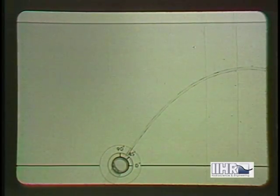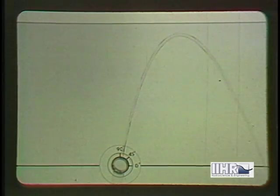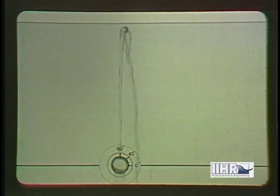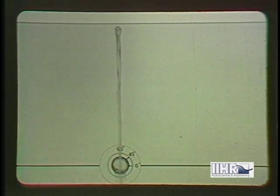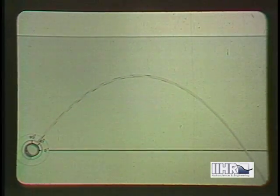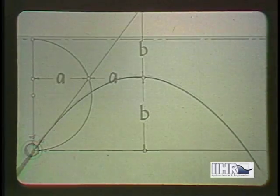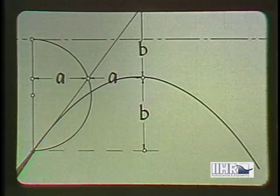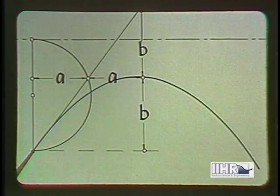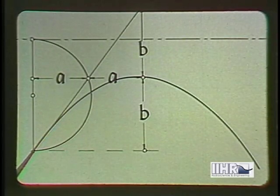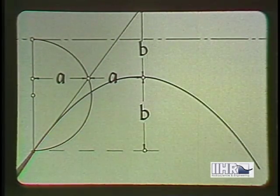Torricelli, a pupil of Galileo, reasoned from his master's laws of free fall, that a vertical jet should rise practically as high as the free surface in the supply tank. Moreover, for an inclined jet, from the geometry of the parabola and the circle, he showed that the intercept of the initial tangent, with a circle based at the point of tangency, determines the location of the vertex, and hence of all other points, of the parabolic jet profile.